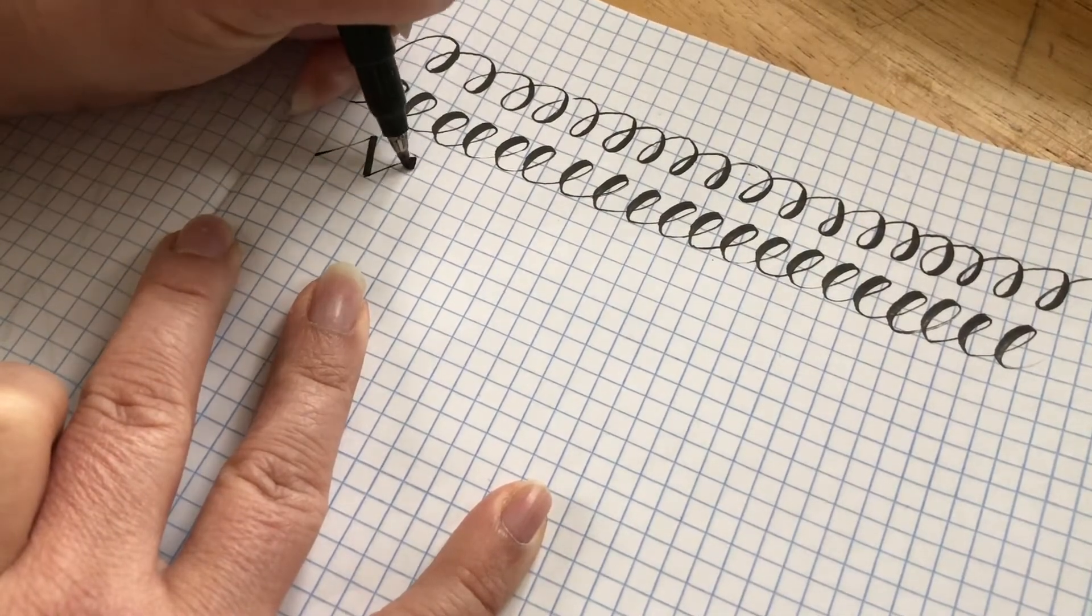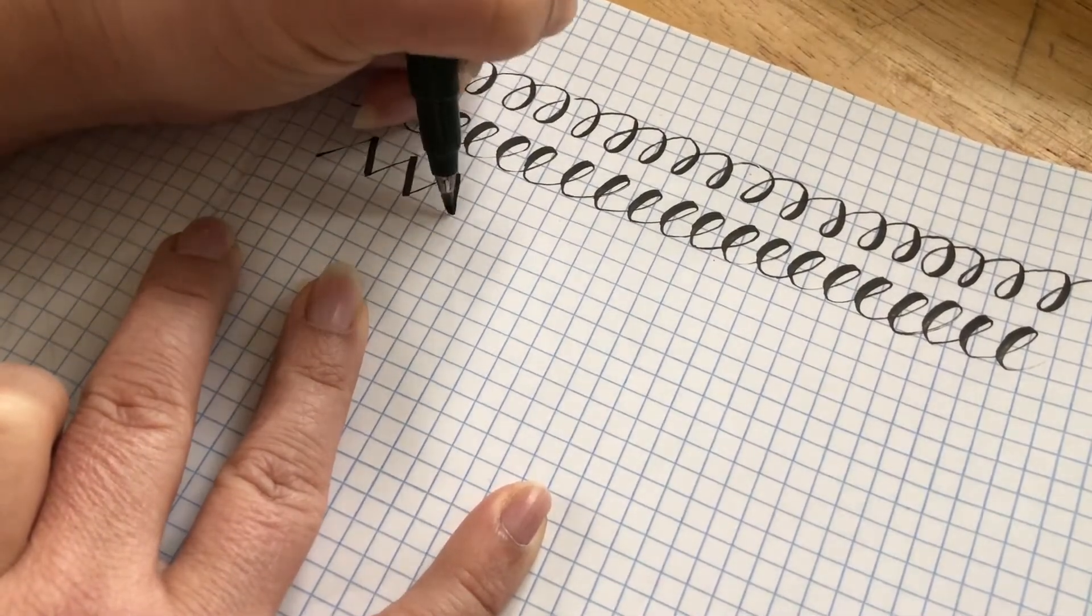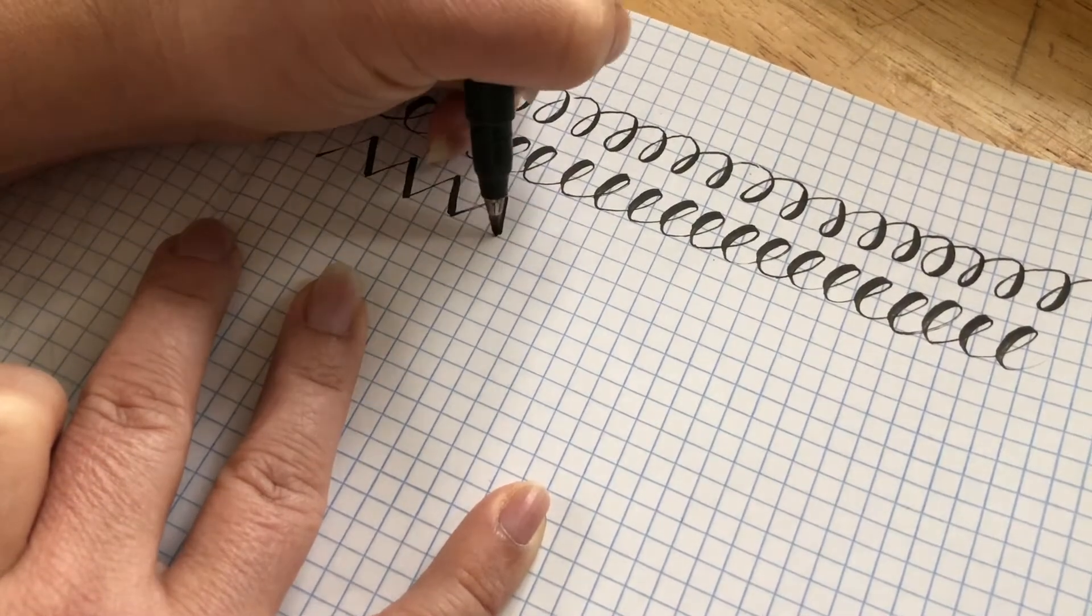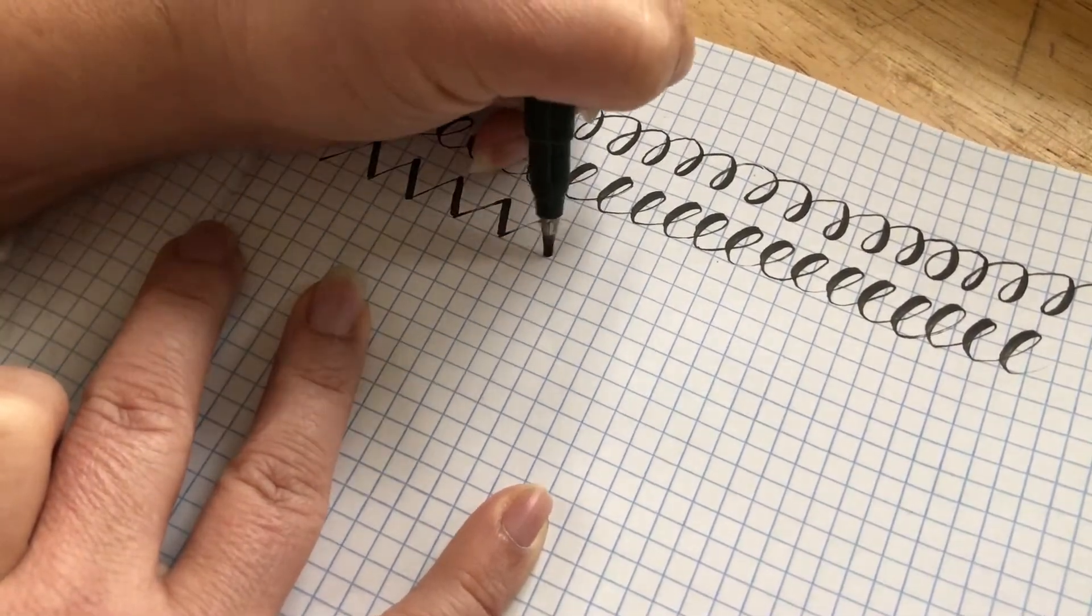Practicing the diagonal strokes give a very clear transition point where you can go from the fine up stroke to the heavier broad down stroke.